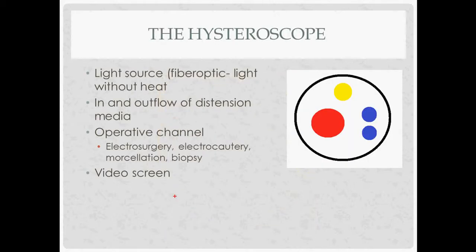How the hysteroscope itself works: you have a light source and a camera using fiber optic light, which gives a nice light without heat and allows you to see what's going on. You have inflow and outflow of the distension media. Then you have the operative channel, where you put in whatever tools you need — electrosurgical tools, electrocautery tools, things to morcellate or biopsy. You see what you're doing on a video screen.